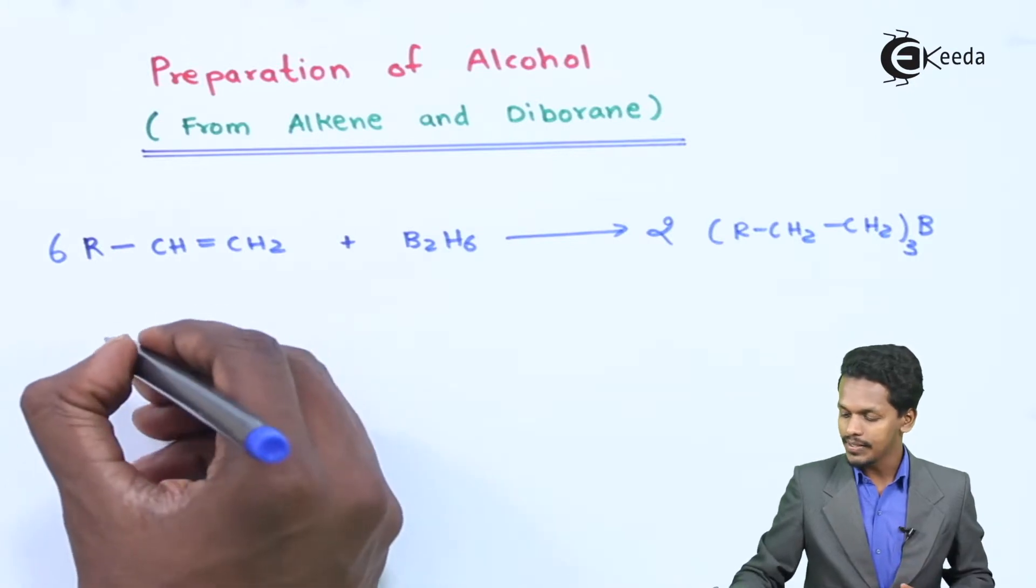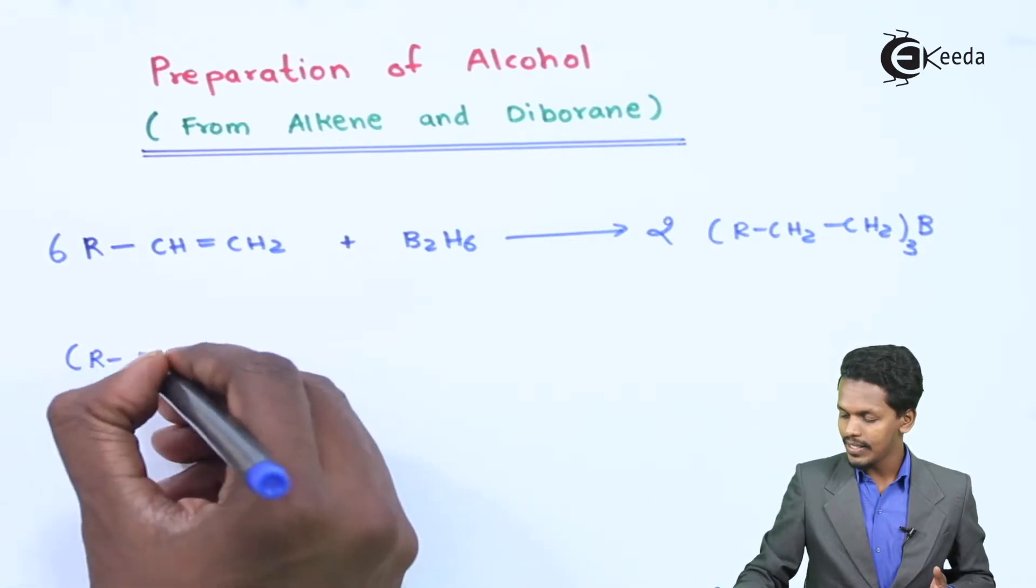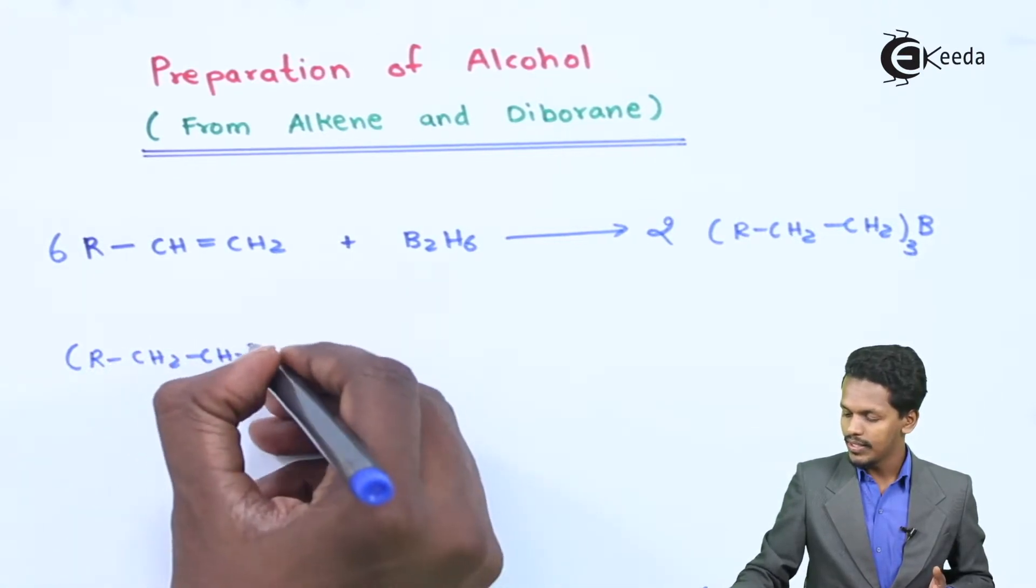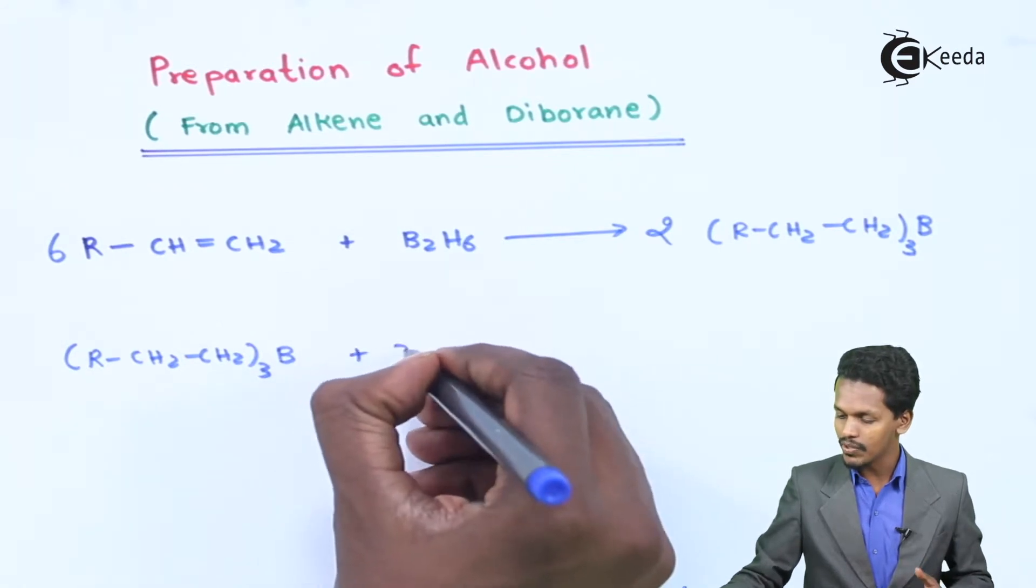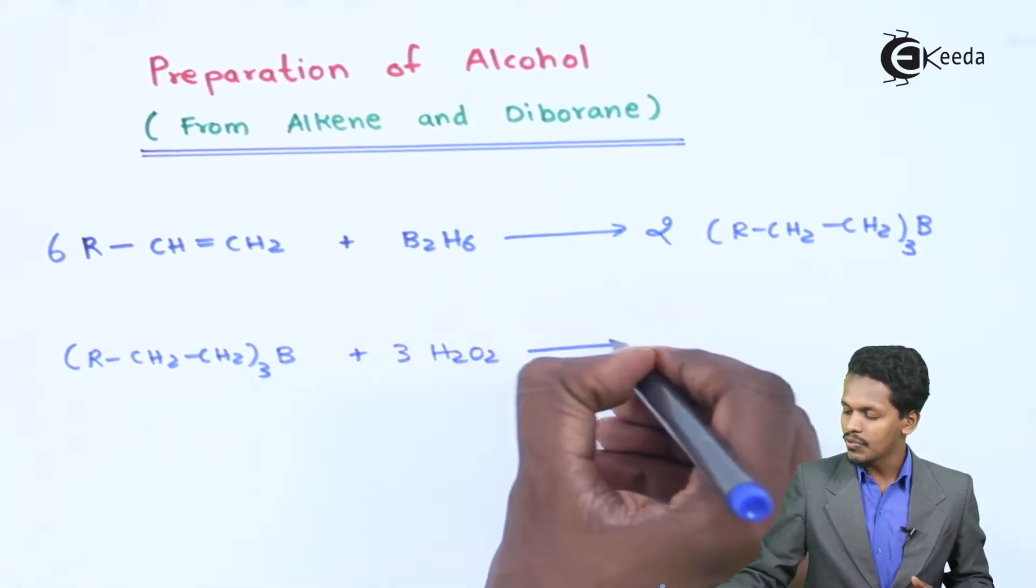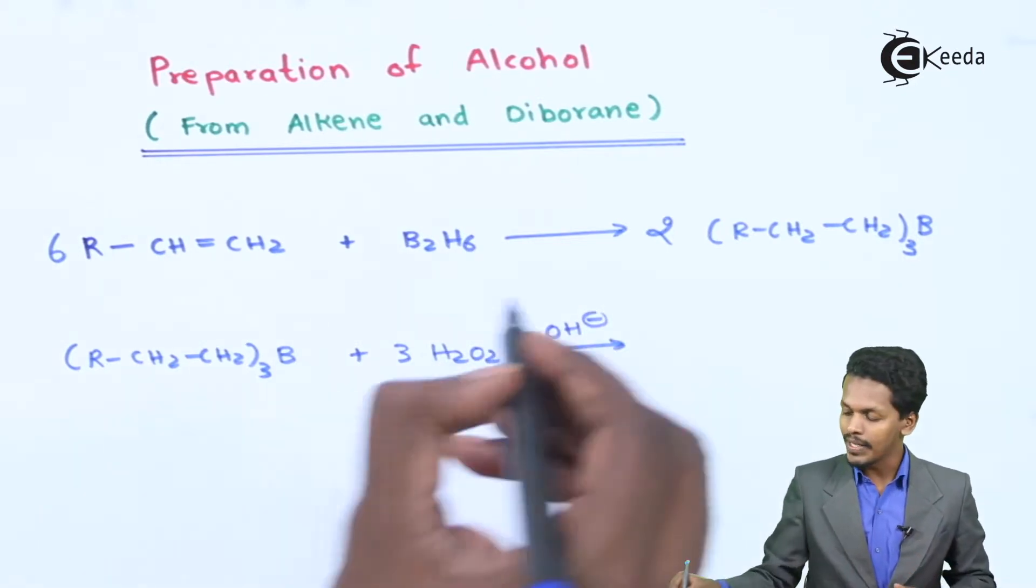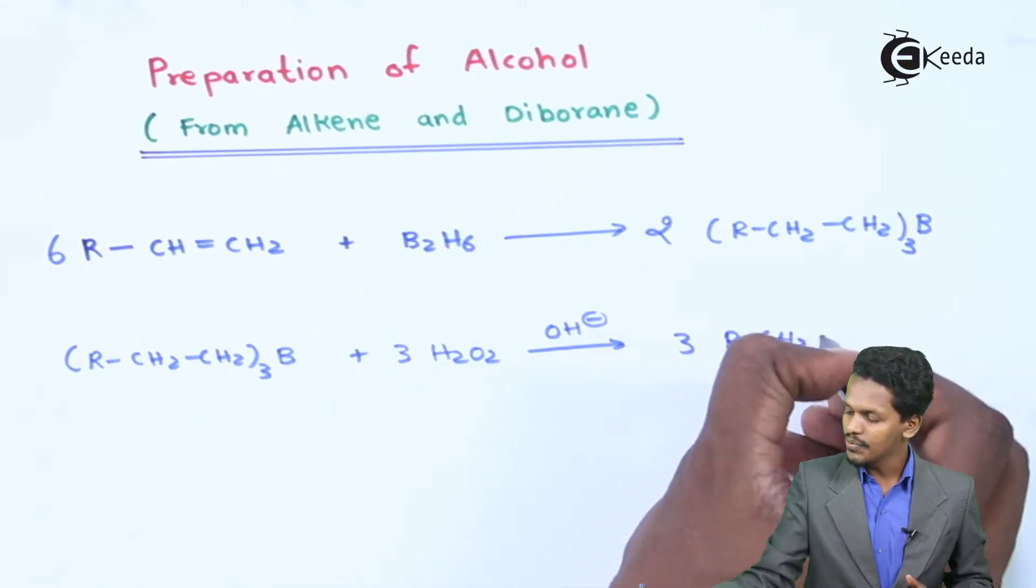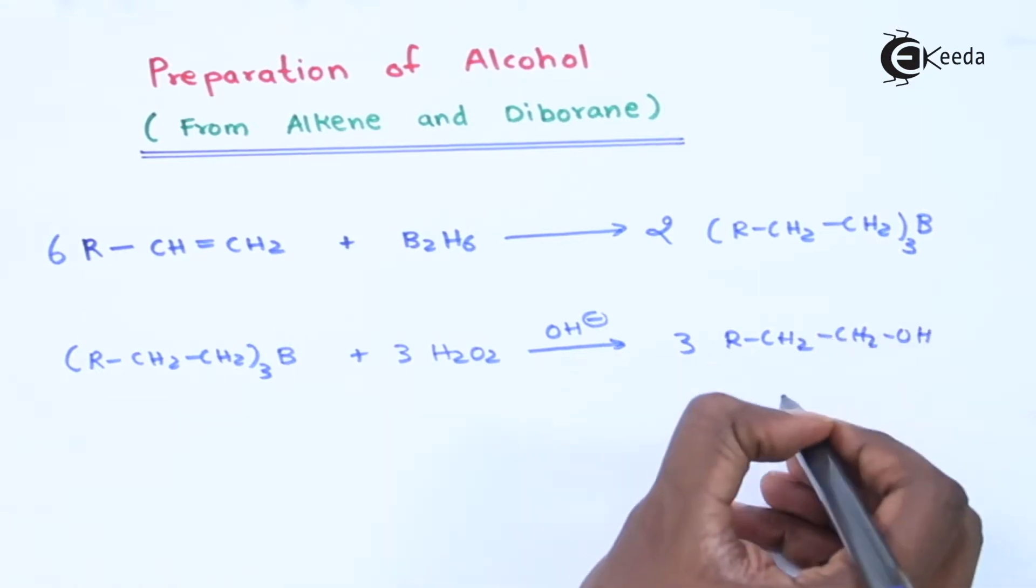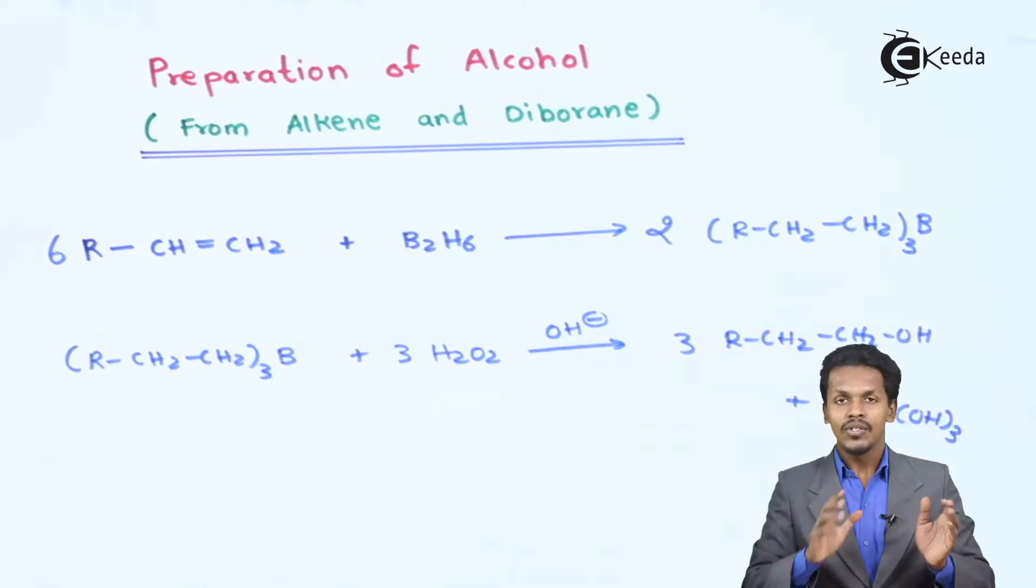And now talking about the next one, this is the product that we have obtained that is (R-CH2-CH2)3B. So this is actually known as trialkyl borane. And now this trialkyl borane will react with hydrogen peroxide, that is 3 moles of H2O2, and that also in the presence of a base that is OH- or it could be NaOH or KOH, strong base. So the product that we could obtain here is 3 moles of R-CH2-CH2-OH and the by-product that will be B(OH)3. So this is the product that we will get.